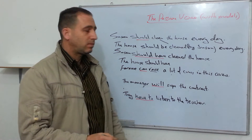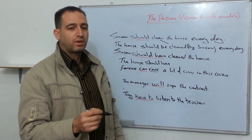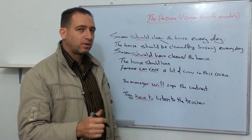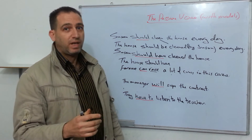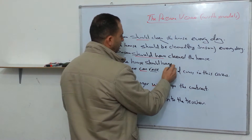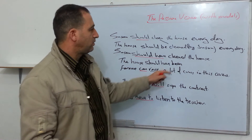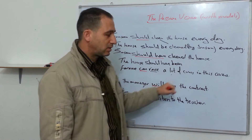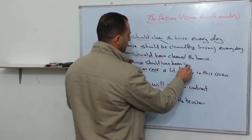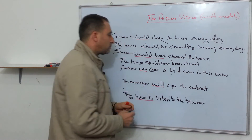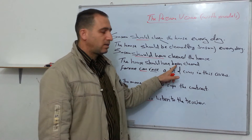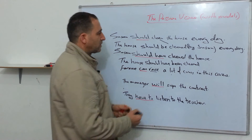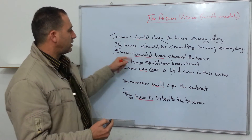After the helping verbs and before the main verb, I add the suitable form of 'to be.' After 'have,' we use a past participle, so the form of 'to be' here is 'been.' The house should have been — and then the main verb becomes the third form: cleaned. So: 'The house should have been cleaned.' If I want to say by who, I can say 'by Susan.'